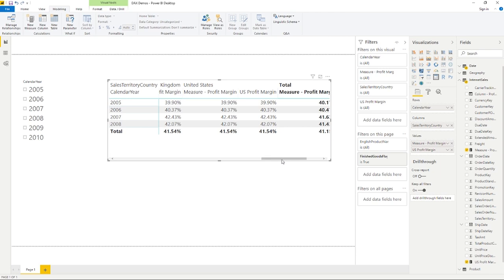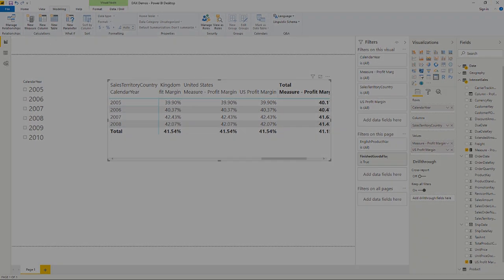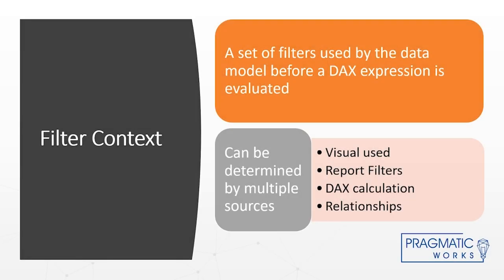To review filter context: it encompasses everything within your report that affects how your data is filtered — visuals, slicers, the filters pane, DAX calculations like the CALCULATE function, and relationships. Relationships determine how data is filtered from one table to another, which direction filtering flows between tables, and ultimately what data you see in your visuals.